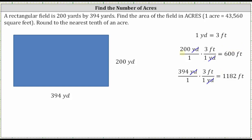200 yards is equal to 200 times three feet, which is equal to 600 feet. And 394 yards is equal to 394 times three feet, which is equal to 1,182 feet.